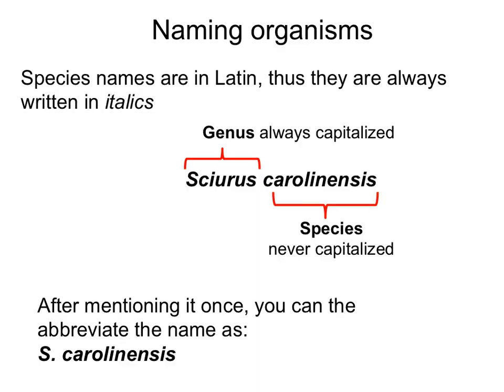Linnaeus also proposed a system for how to name organisms, using Latin to name them. So all species names are in Latin, and that's why they're always written in italics. In English, when you write a word in a foreign language you use italics, so species names are always italicized.